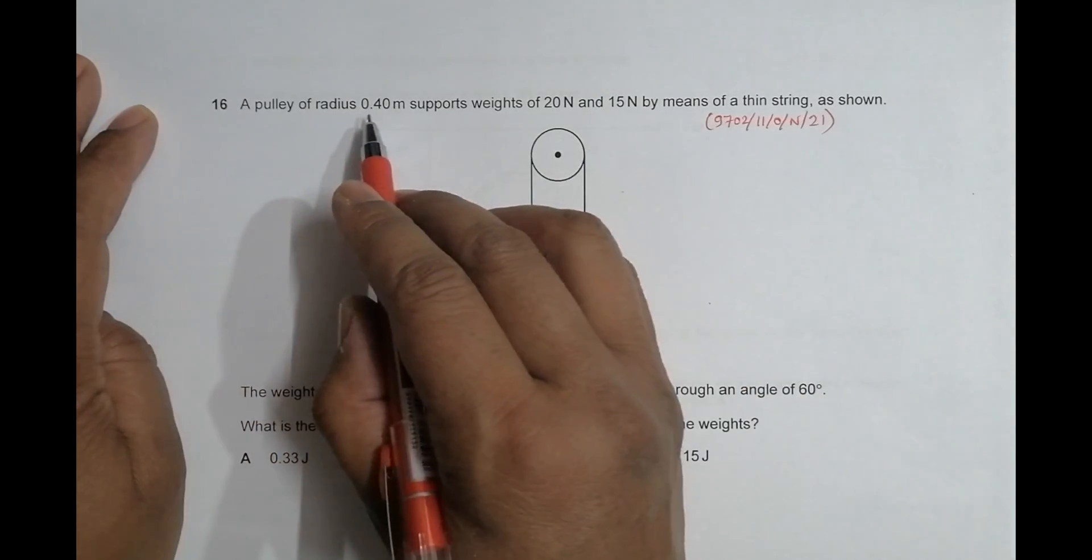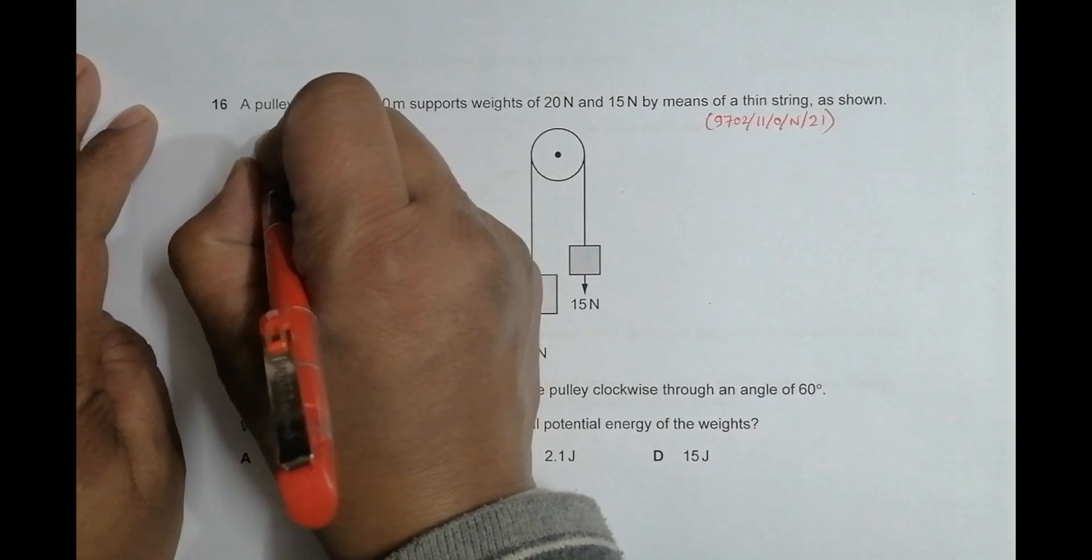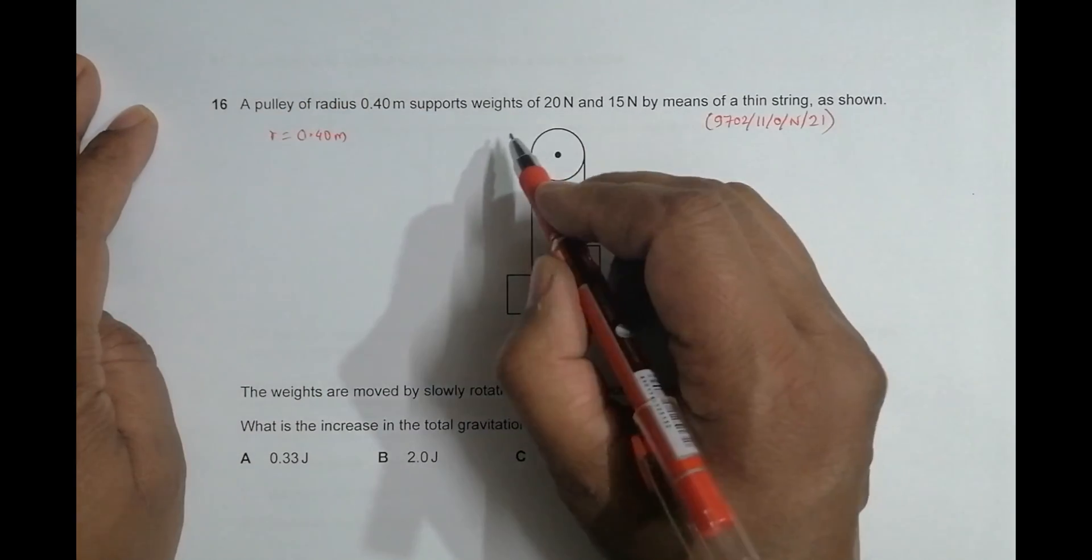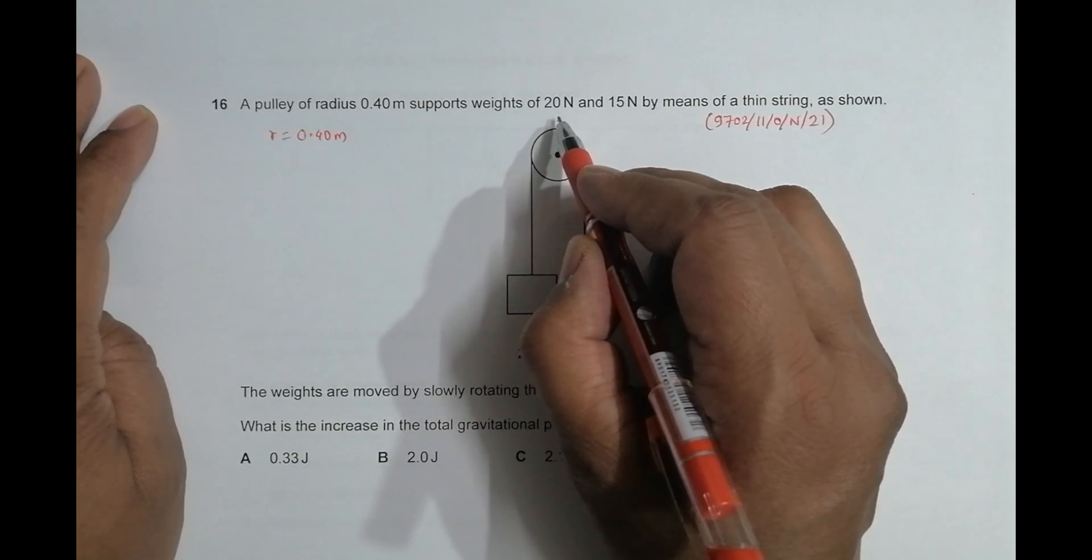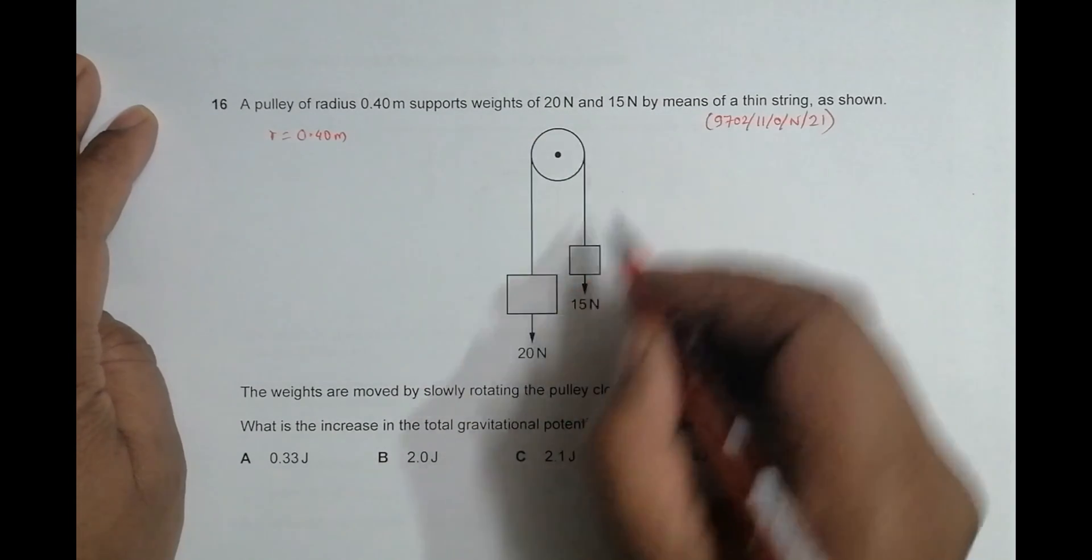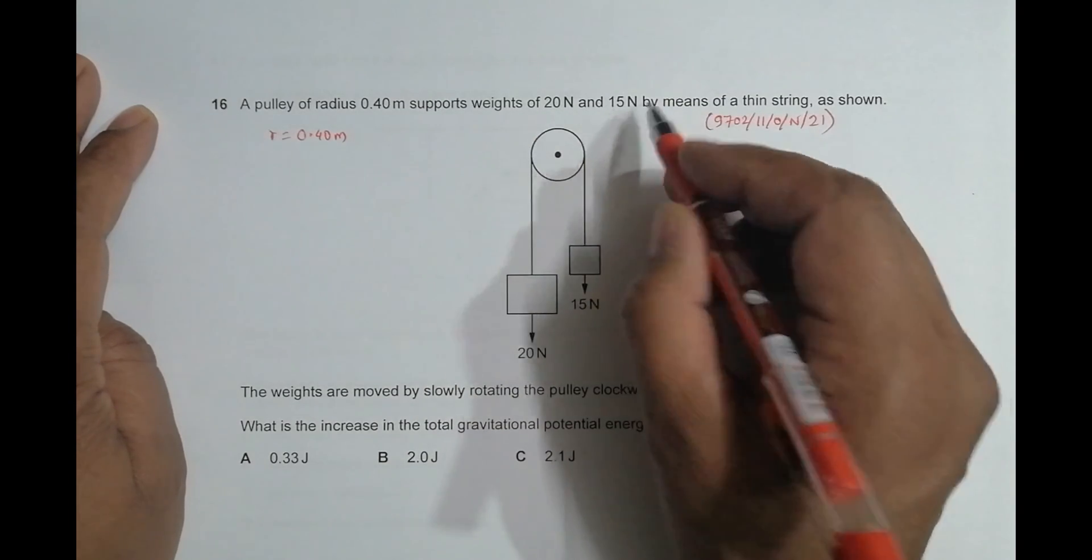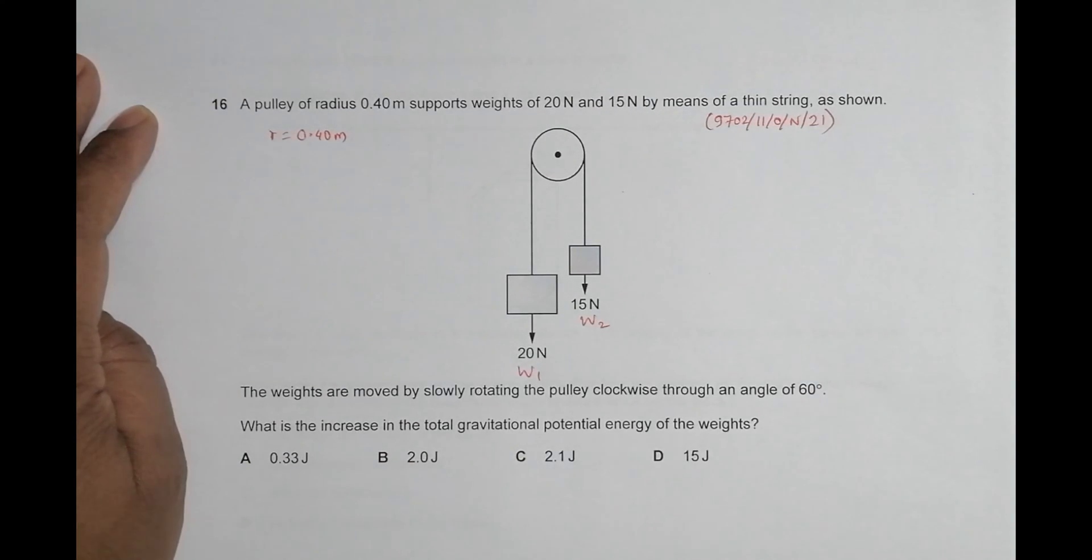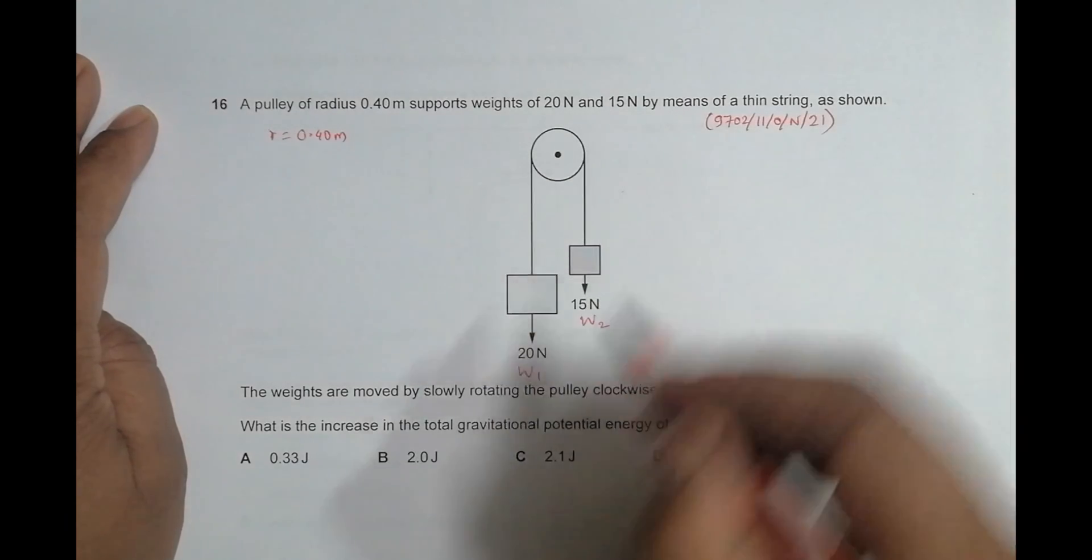It says a pulley of radius 0.40 meters, so r is equal to 0.40 meters, supports weights of 20 Newton and 15 Newton here. So this is let us say W1 and W2 here, by means of a thin string as shown.